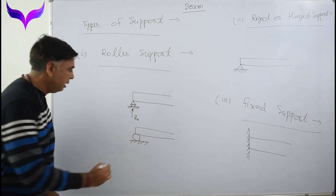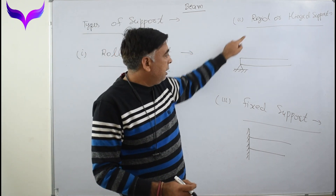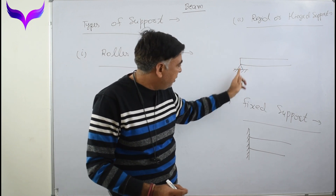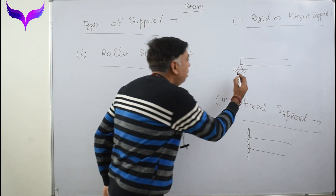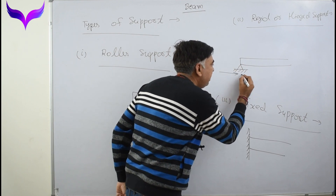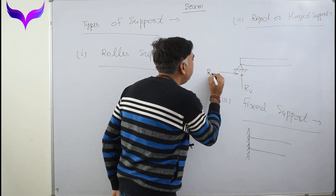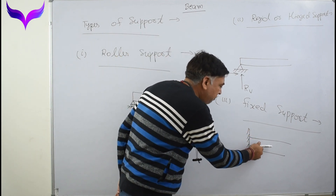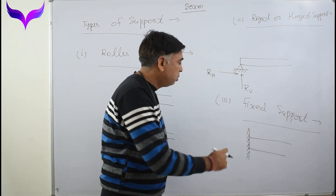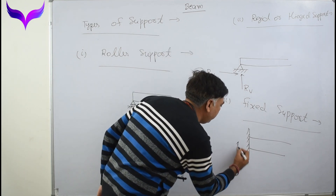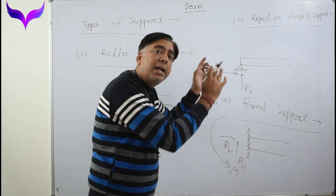This vertical reaction is denoted as RV. Similarly, RV is present for the roller. In the case of a hinge or rigid support, the beam does not move in the vertical direction and does not move in the horizontal direction, but it can easily rotate about this point. So there are two reactions: horizontal reaction in the x-direction, and vertical reaction.